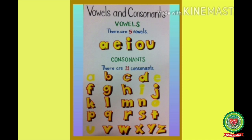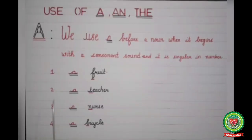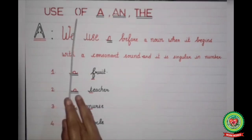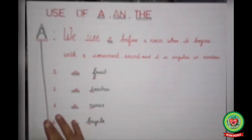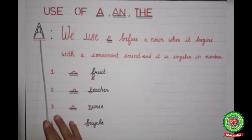Kids, before telling you the use of the articles, I would like to tell you about vowels and consonants. There are five vowels: A, E, I, O, U, and there are 21 consonants like B, C, D, etc. Now kids, I will tell you the use of 'a' and 'an'.